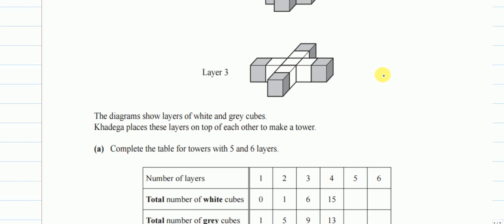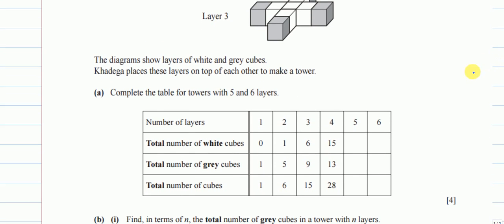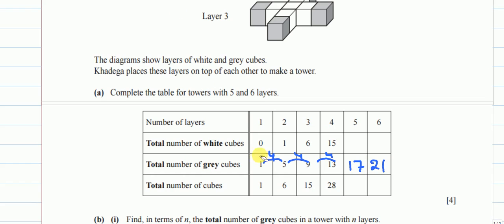The diagram shows layers of white and gray cubes. Khadija places these layers on top of each other to make a tower. We need to complete the table for towers with five and six layers. For gray cubes, it's obvious — they are adding four more each time at the corners: 5 + 4 = 9, 9 + 4 = 13, 13 + 4 = 17, 17 + 4 = 21.